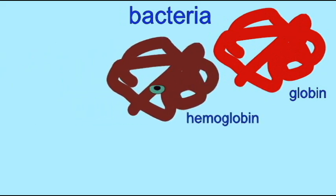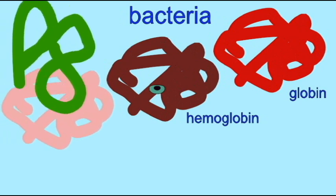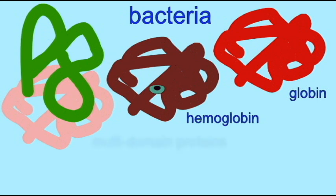Globins are known in bacteria. They can exist as single globin proteins, they can exist as hemoglobin, and then they may bind other proteins and form multi-domain proteins.